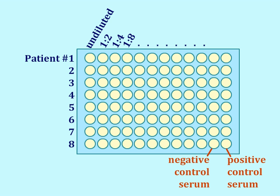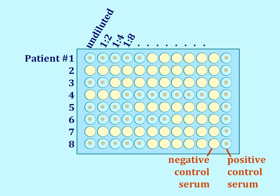When the plate is allowed to incubate at room temperature, the wells containing the negative control serum remain unchanged. The wells containing the positive control serum develop a visible button at the bottom, and the solution in those wells has changed from milky to clear.